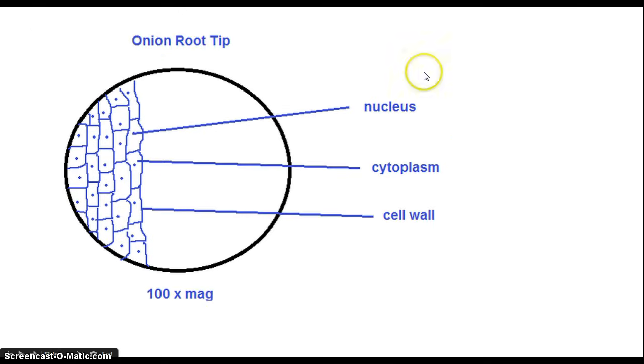Did you get all of them? This is an appropriate way to label this drawing. You'll notice that the label lines extend to the middle of the structure. They do not cross. The labels are horizontal and printed. We've also added to this one the title and the total magnification of this particular drawing.